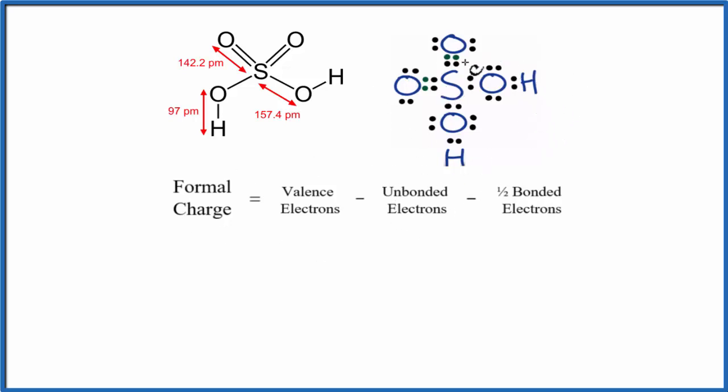So I have H2SO4 written differently up here. They're equivalent structures. You can see the two double bonds here, like we have here. We have the sulfur, oxygen, and hydrogen here, and then we have the same thing here. This one's a little bit easier to work with when we're calculating formal charges because we can see all of the valence electrons. So why don't we start out with the double bonded oxygen.